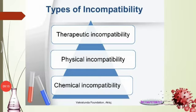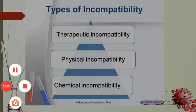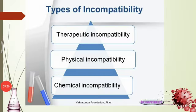Incompatibilities have three main types: first, therapeutic incompatibilities; second, physical incompatibilities; and third, chemical incompatibilities. We will now discuss them one by one, starting with physical incompatibilities.